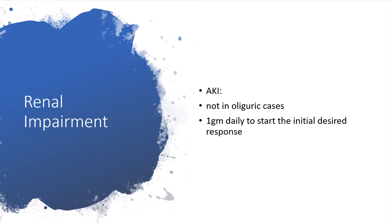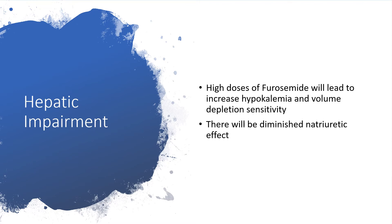In renal impairment like acute kidney injury, but not in oliguric cases, you can use up to one gram daily to elicit the initial desired response. In hepatic impairment, high doses of furosemide can lead to increased hypokalemia and volume depletion sensitivity. There will be diminished natriuretic effect, so be watchful in hepatic impairment.